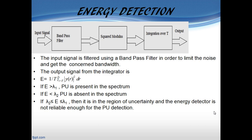If the energy value is greater than the predefined threshold λ1, then the primary user is present. If the energy value is less than the predefined threshold λ2, then the primary user is absent. If the energy value lies between λ1 and λ2, it goes into a region of uncertainty and the energy detector is considered not reliable enough for the detection process.